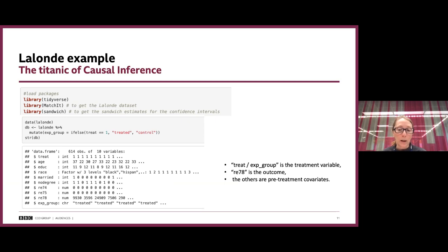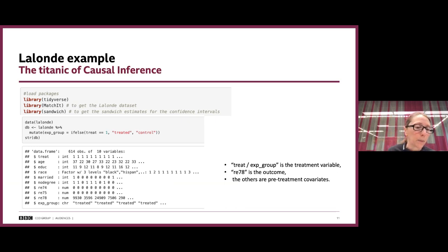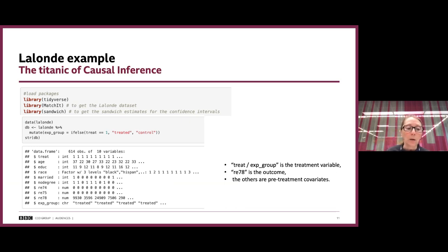The outcome is revenue in 1978 and we have other pre-treatment covariates such as people's age, level of education, race, whether they were married, whether they had a degree, and also their revenue levels in 1974 and 1975 — that is, before the treatment.